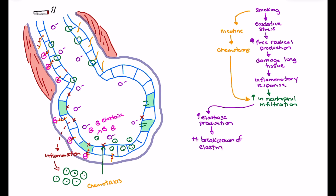One is that elastin lives between our bronchioles and provides bronchial tethering — it acts like a little spring between bronchioles, pulling them open, especially during times of increased pressure when we're expiring and intrathoracic pressure is going up. As we lose that bronchial tethering due to elastin breakdown, the bronchioles are not able to stay open as well. So we get bronchial collapse.